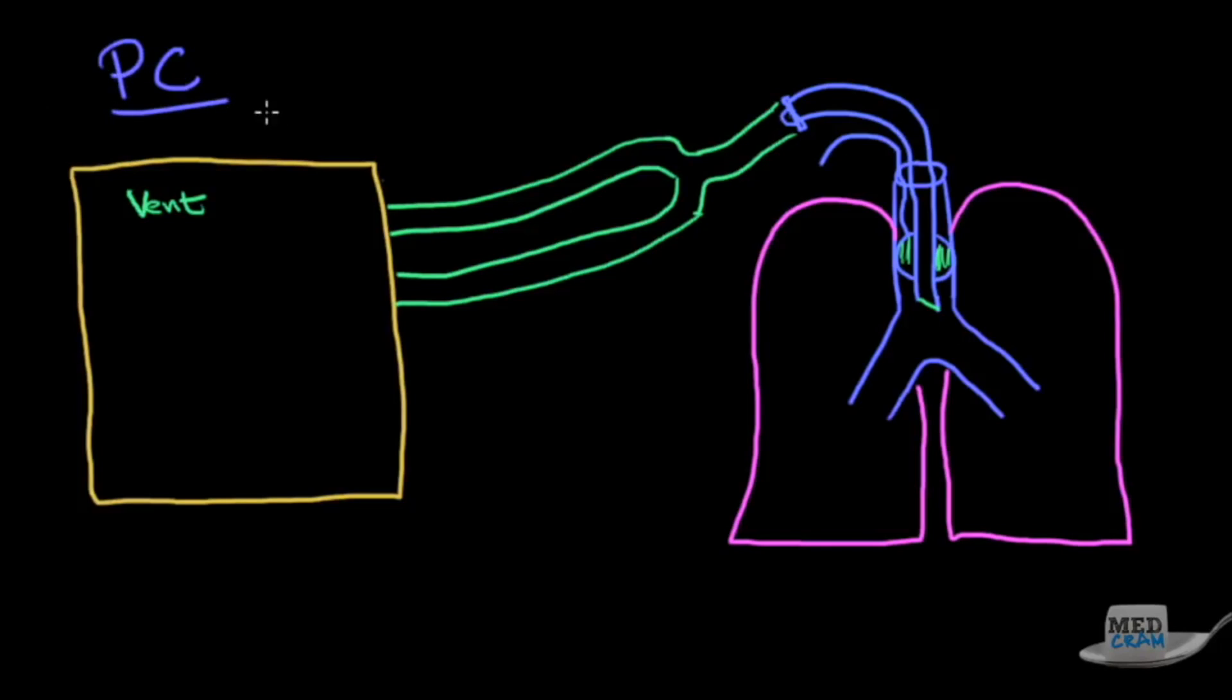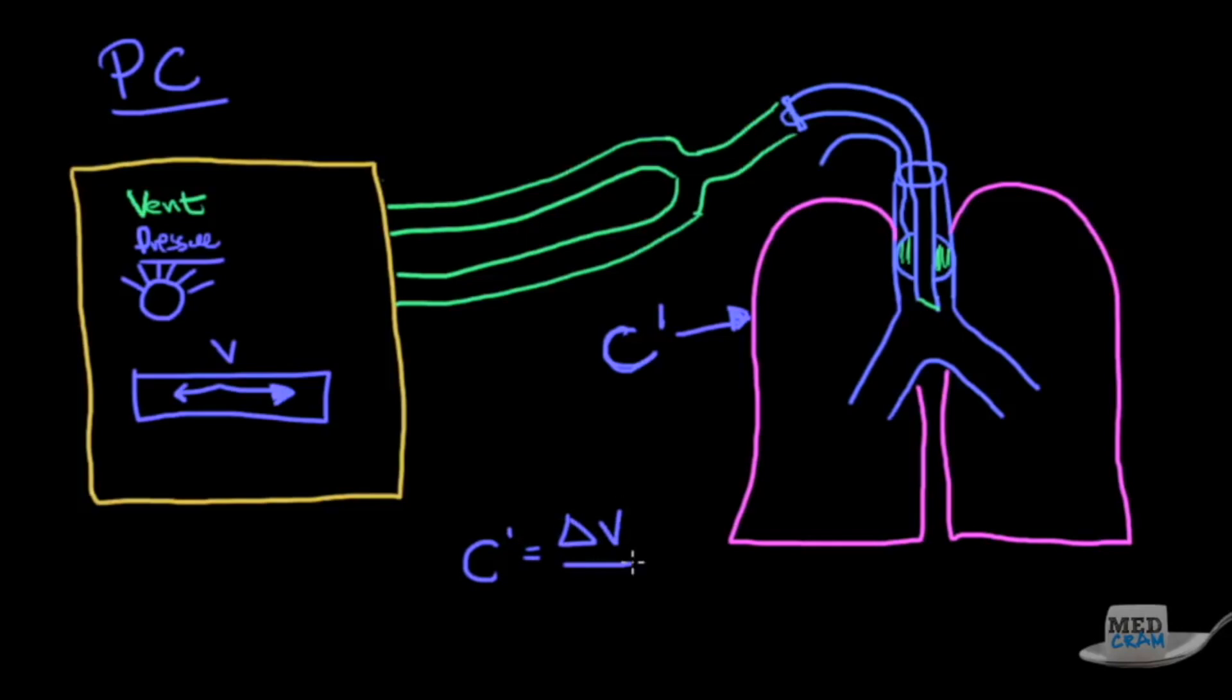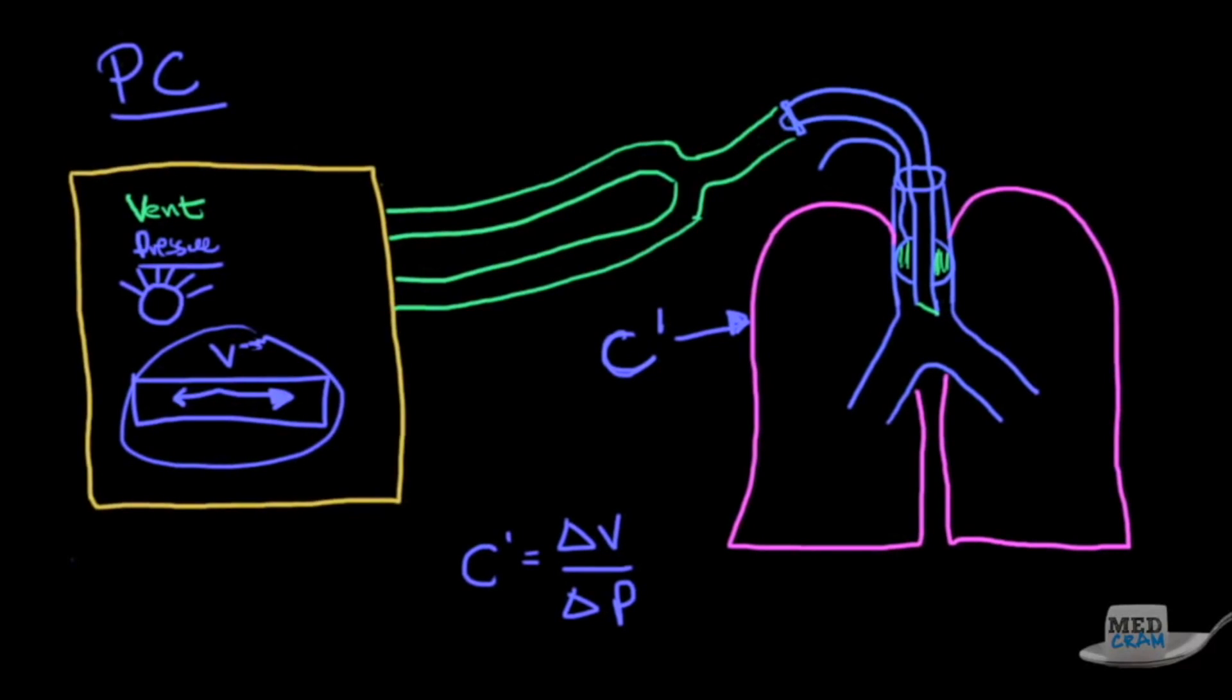Now let's make this converse to pressure control. In pressure control, what we're doing is we're setting a pressure. In other words, we're going to decide how much pressure we're going to ventilate this patient with. And so as you can imagine, if we're setting a pressure, there is a specific compliance to this lung, depending on what state it is in. If we set a certain pressure and the compliance of this lung is very low, then you can imagine we're going to have lower volumes. However, if the compliance of this lung is very high, then we're going to have higher volumes. Because remember, compliance is equal to the change in volume over the change in pressure. So in pressure control, you can also have the patient or time triggering a set change in pressure. And depending on the compliance, the volume can change.